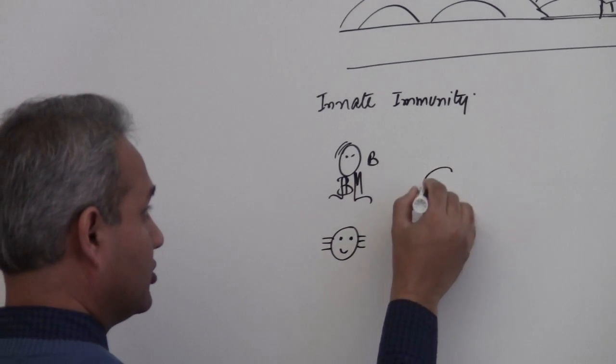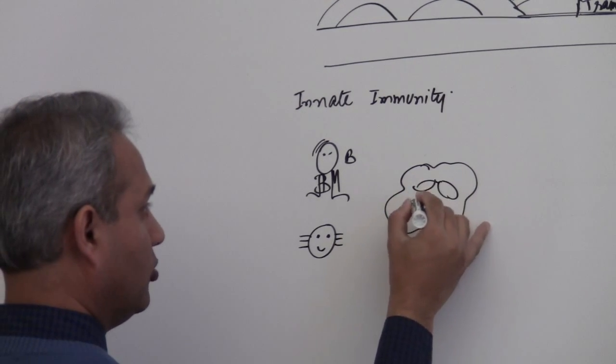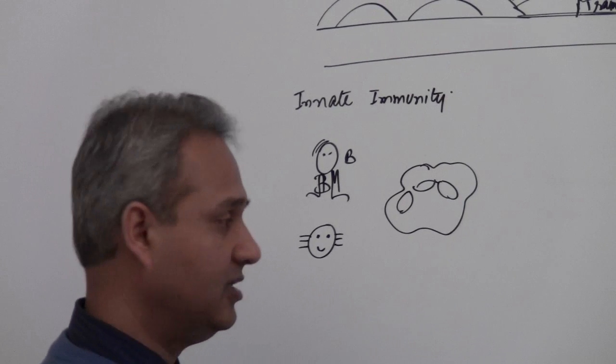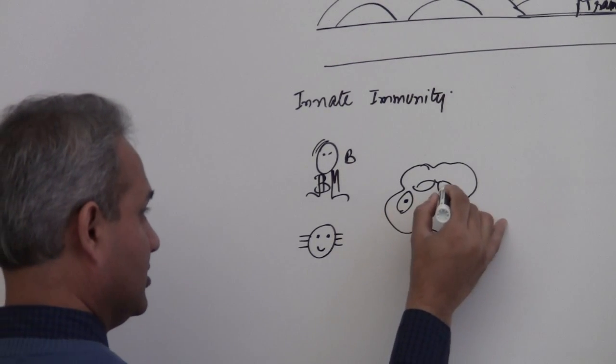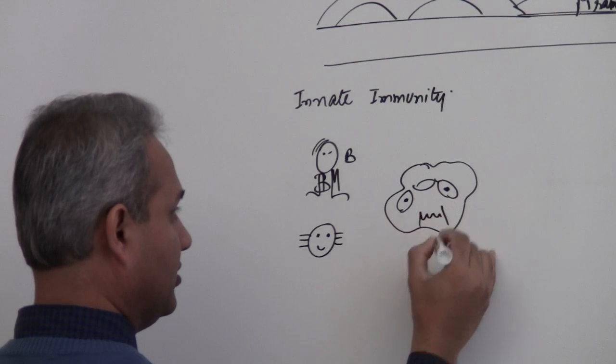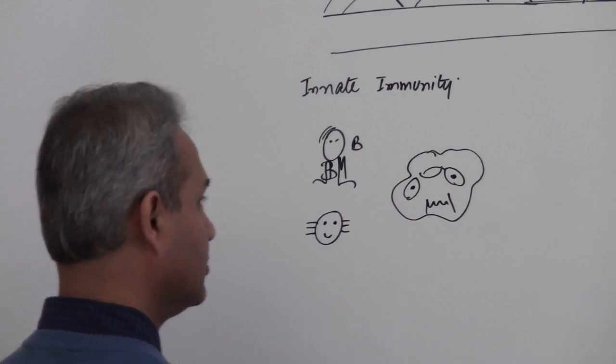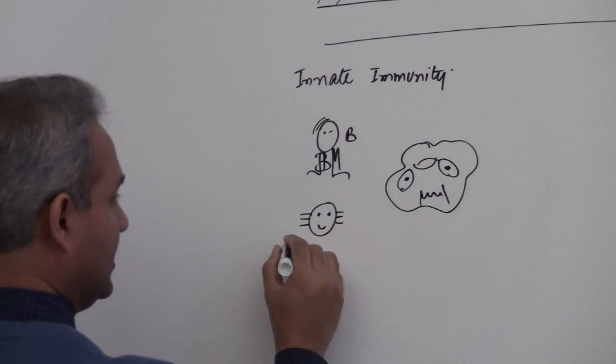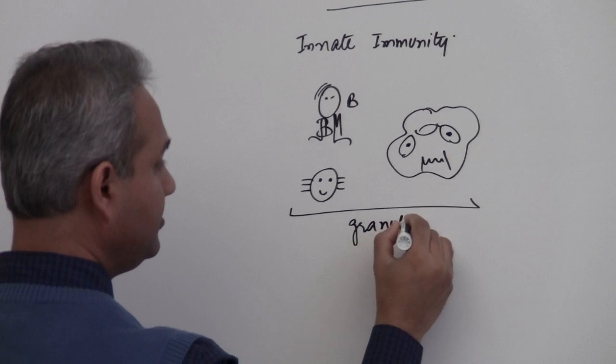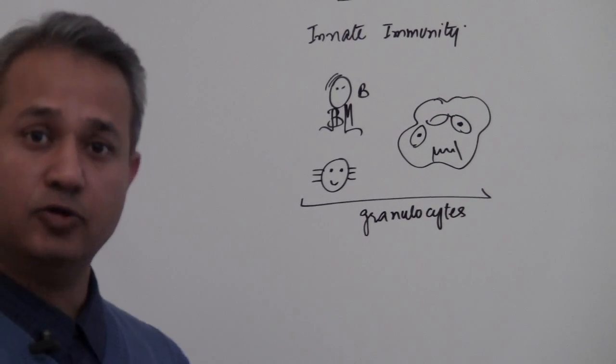Then we have the neutrophils. Neutrophils are usually multi-lobed, and so the nucleus is multi-lobed, not the cell. So multi-lobed nucleus. So this is a neutrophil. Neutrophils are really bad guys and they really are very helpful for us. So neutrophils, and then basically these all are called granulocytes.